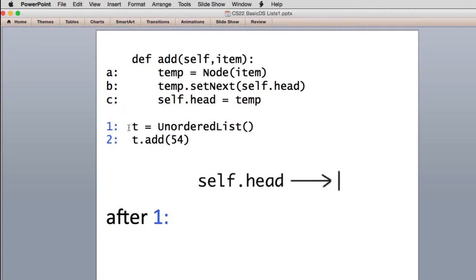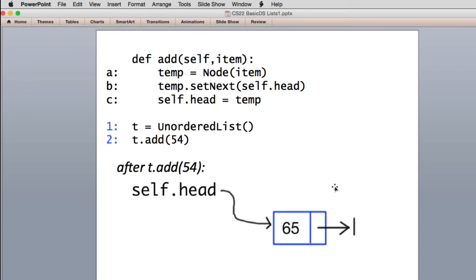In line one, we create an unordered list. So this is what happens after we've just done this one line. T is a new unordered list and its internal self.head will point to none. So we use this to indicate that it points to none graphically. Now inside the self.add, after t.add54, we want it to look like this. We want the head to point to the new item, and then the reference to that points to none.